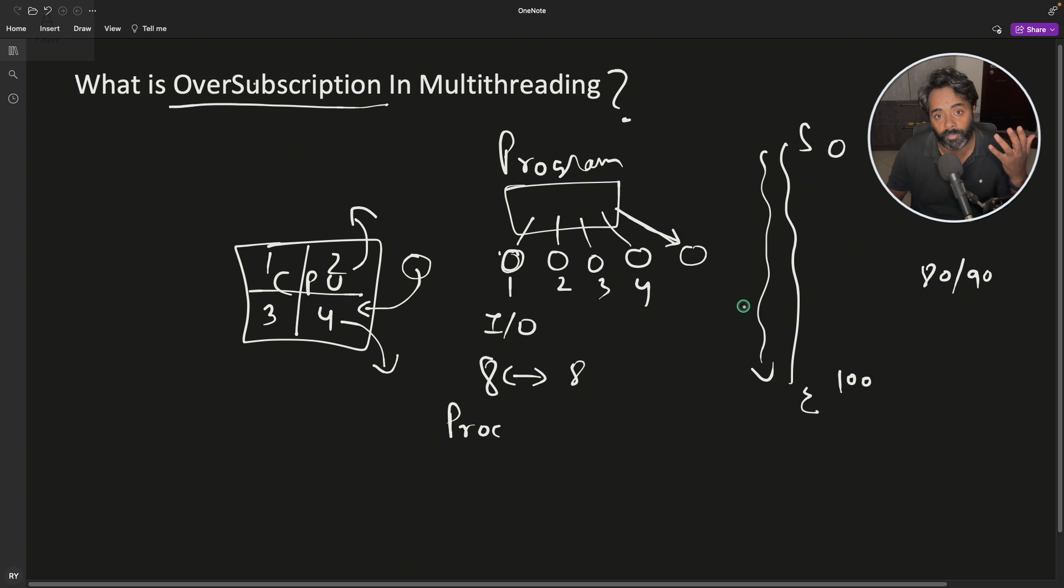And if they are blocked, the processor is not doing anything. So if the processor is not doing anything, then it is always a good idea to have one extra thread or two extra threads so that the processor is still occupied when one thread is in a block state. So this is oversubscription in multithreading.